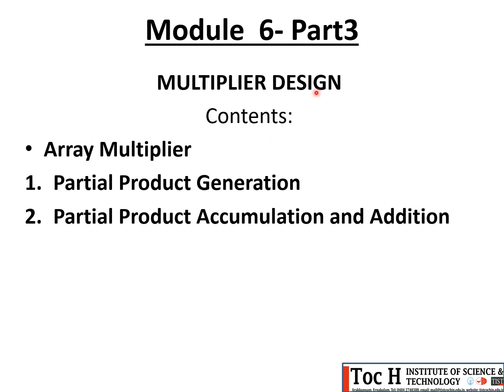The contents covered in this lecture are mainly regarding the array multiplier. When we look at the array multiplier configuration, we will see that it contains two main steps: partial product generation and partial product accumulation and addition. We will learn these two main steps and their configurations in detail.